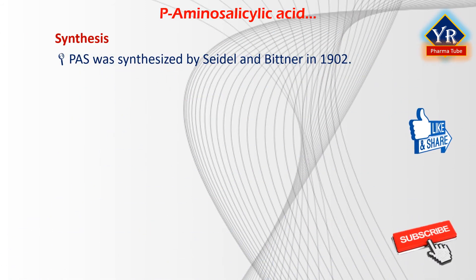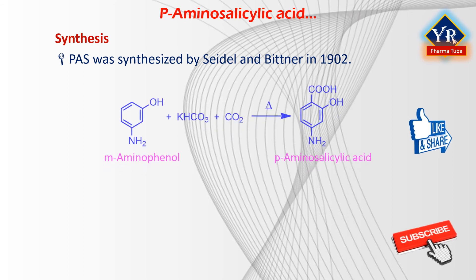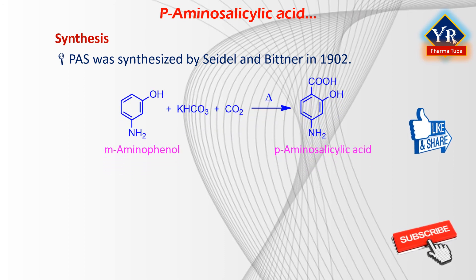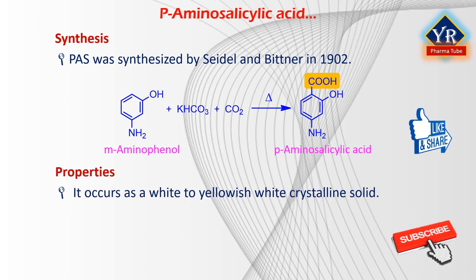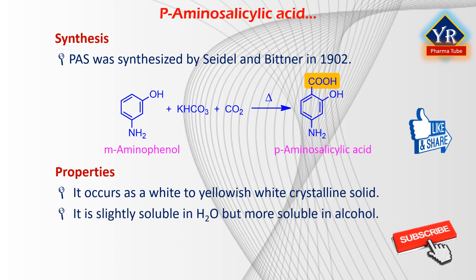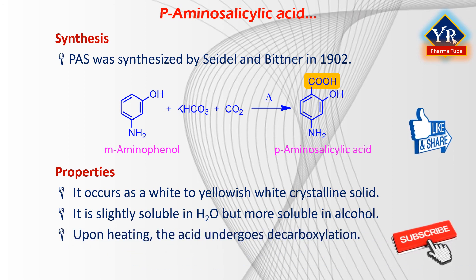Paraaminosalicylic acid was first synthesized by Seidel and Bittner in 1902. Its synthesis consists of direct interaction of meta-aminophenol with potassium bicarbonate and carbon dioxide while heating at a moderate pressure of 5-10 atmospheres. It occurs as a white to yellowish-white crystalline solid that darkens on exposure to light or air. It is slightly soluble in water but more soluble in alcohol. Alkali metal salts and the nitric acid salt are soluble in water, but the salts of hydrochloric acid and sulfuric acid are not. Upon heating, the compound undergoes decarboxylation to produce carbon dioxide and 3-aminophenol. An aqueous solution has a pH of approximately 3.2.